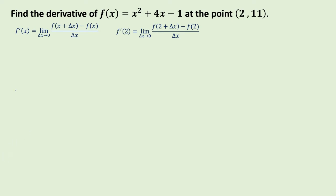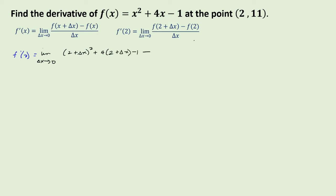So, f prime of 2 equals the limit as delta x approaches 0 of f of (x plus delta x). We are going to substitute (2 plus delta x) into x in the given equation. That would be (2 plus delta x) squared plus 4 times (2 plus delta x) minus 1, minus f of 2. So we substitute 2 into the function: 2 squared plus 4 times 2 minus 1, all over delta x.